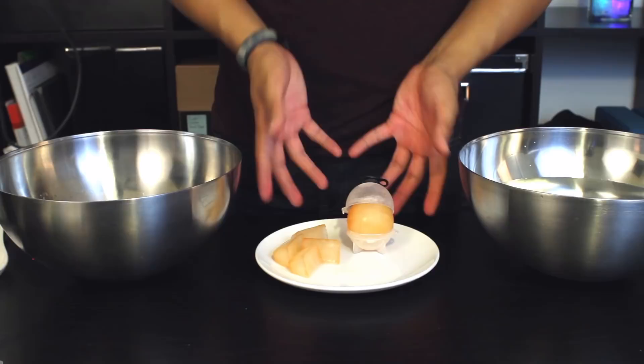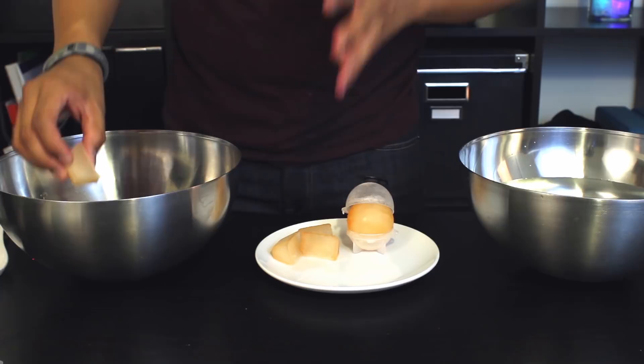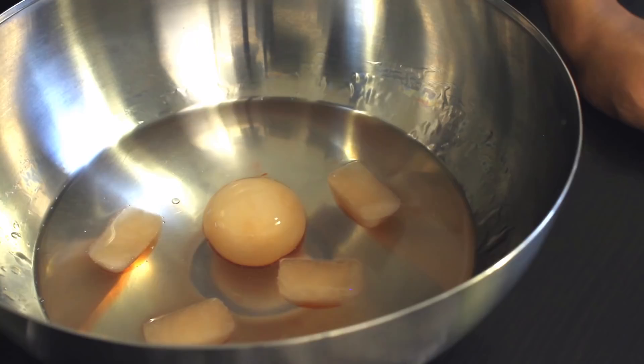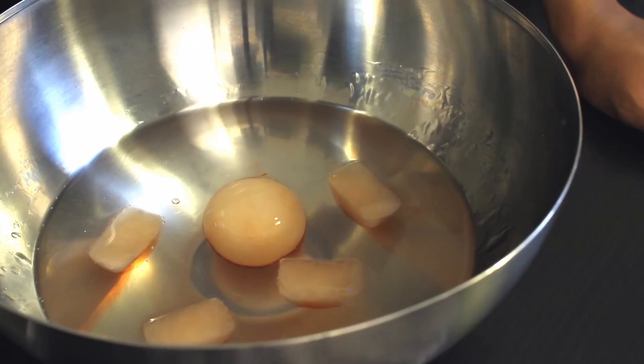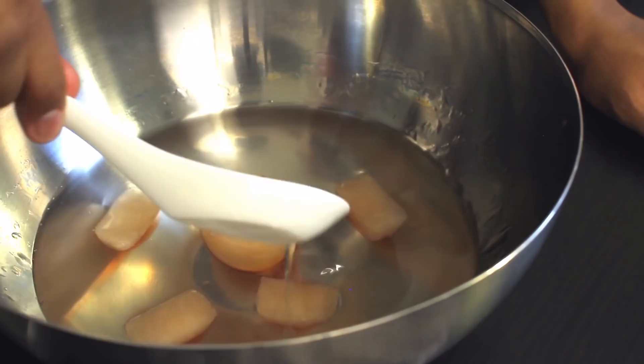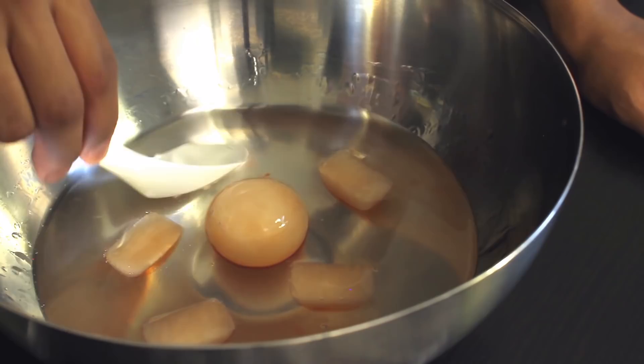Once your ice cubes have frozen, go ahead and take them and just put them in your sodium alginate bath. Make sure they don't touch each other. Once your ice cubes are inside the sodium alginate, take your spoon and gently pour the solution over your ice cubes. You want to make sure that it's completely submerged and you want to make sure that they are not sticking to each other.